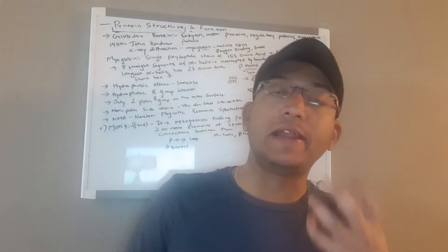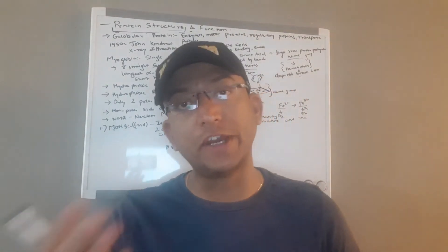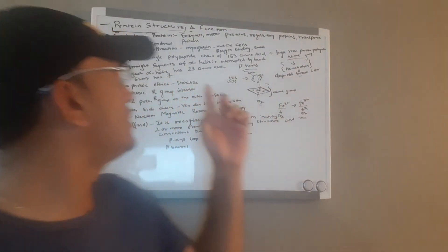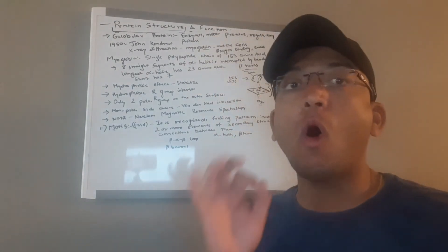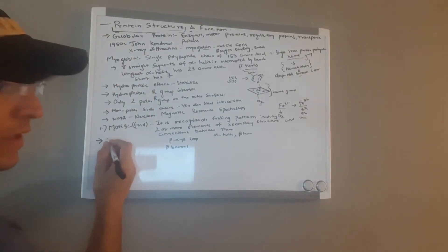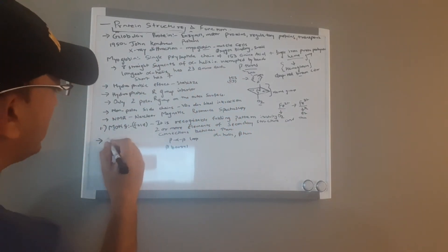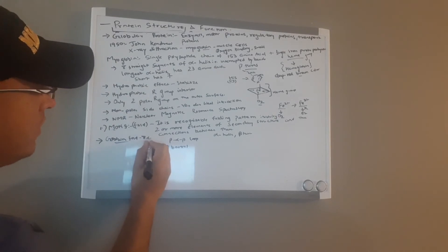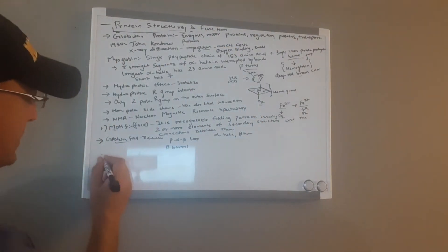The coiled-coil alpha-keratin structure is a well-studied motif. In myoglobin, the eight straight alpha-helix segments represent the globin motif that was studied.